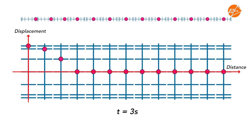At t equal to 3 seconds, the third particle is in turn disturbed by the second particle due to the attractive forces between them and moves from its equilibrium position. Particle 1 and 2's positions have also changed in this third second. The displacement of the three particles are plotted on the graph. For the second particle, its displacement from the equilibrium position is as shown. On the displacement-distance graph, the point is plotted as shown.